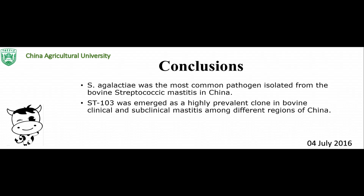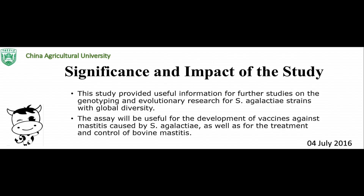About the conclusions: Streptococcus agalactiae was the most common pathogen isolated from bovine contagious mastitis in China. ST103 emerged as a highly prevalent clone in bovine clinical and subclinical mastitis across different regions of China. This study provides useful information for molecular epidemiology, genotyping, and evolution research for Streptococcus agalactiae. The data will also be useful to develop vaccines against mastitis caused by Streptococcus agalactiae, as well as for the treatment and control of bovine mastitis.